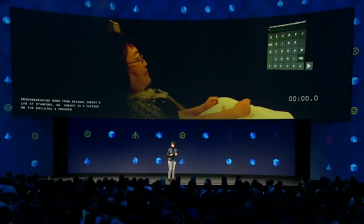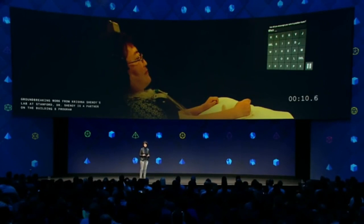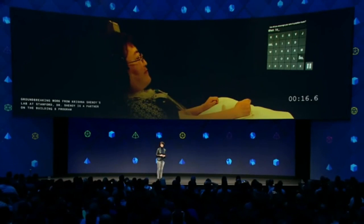An array of electrodes the size of a pea has been implanted where her brain would normally control her motor functions. The electrodes record her neurons firing when she imagines moving the cursor. Then the computer learns to move it for her.